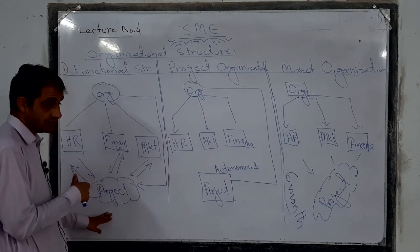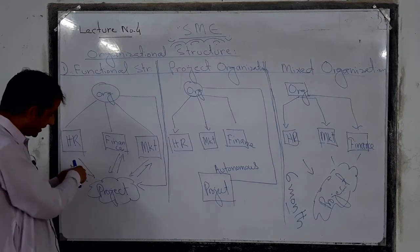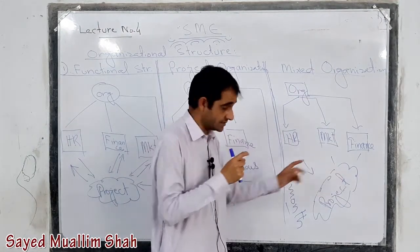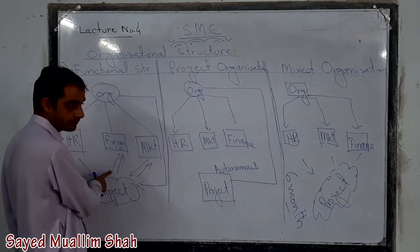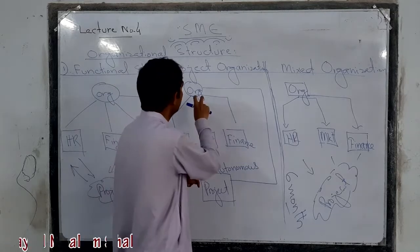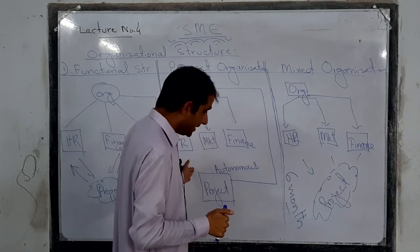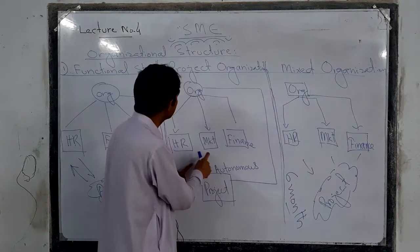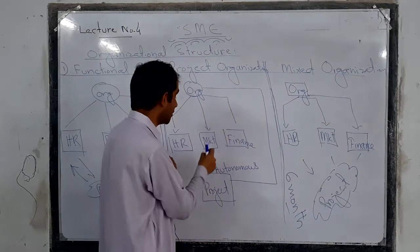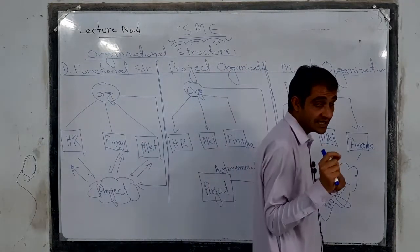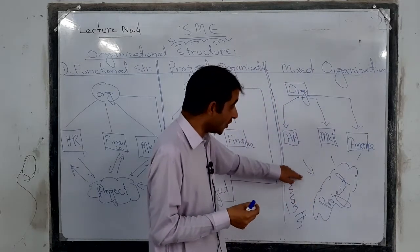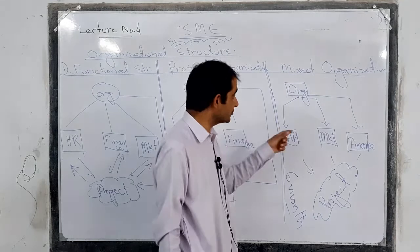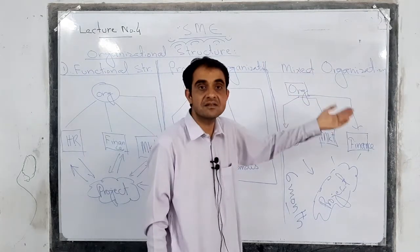How does mixed organization differ from functional structure? In functional structure, employees are answerable to two different departments at the same time. In mixed organization, they come permanently for a specific period and report only to the project department. How does it resemble and differ from project organization? It resembles project organization in that, for a specific period, it functions as an autonomous structure. It differs from project organization because employees will go back to their own departments — they are not permanent employees of the project department. That is why it is called mixed organization.